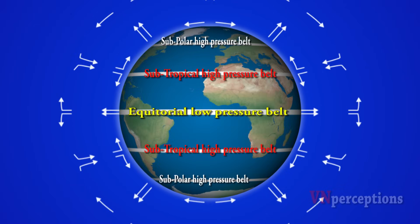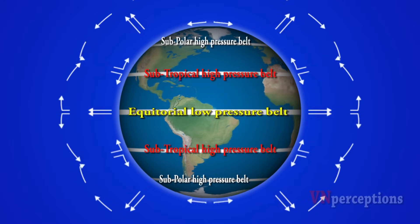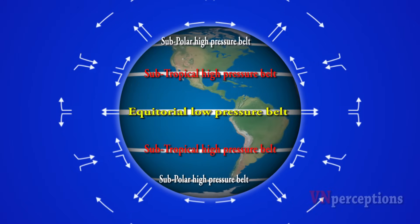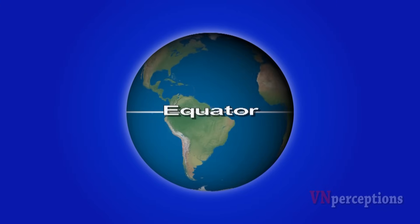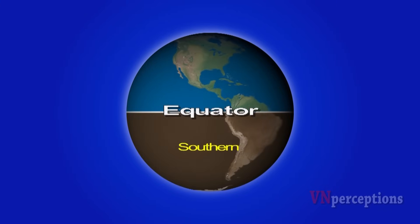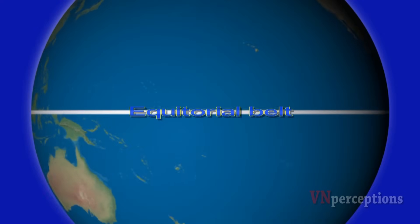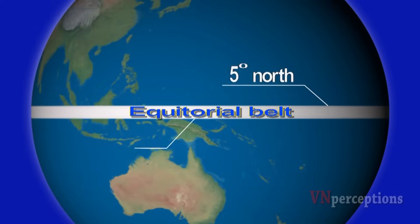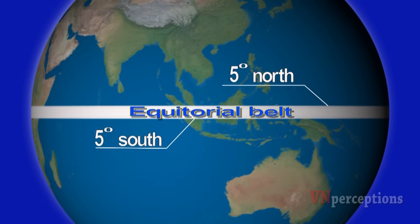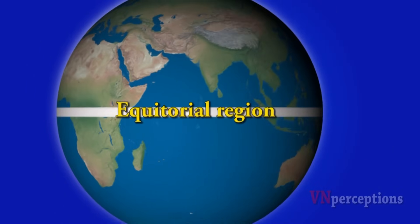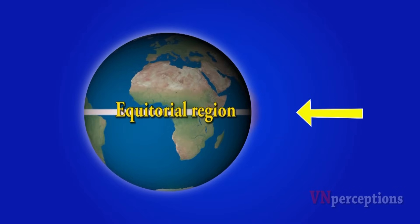Equator divides the globe into southern hemisphere and northern hemisphere. The equatorial belt extends up to 5 degrees north and 5 degrees south. The equatorial region receives nearly vertical rays of the Sun and this heats up the air near the equator.